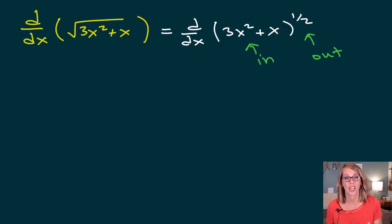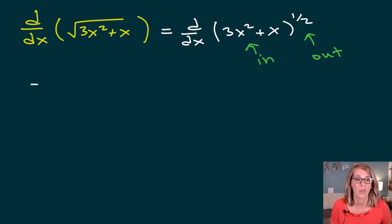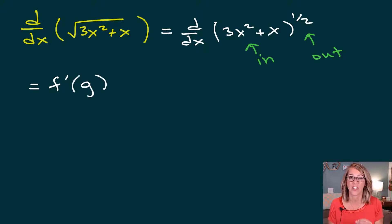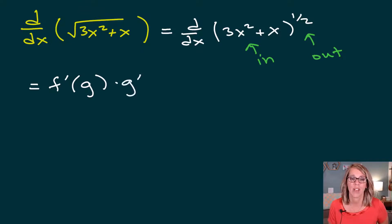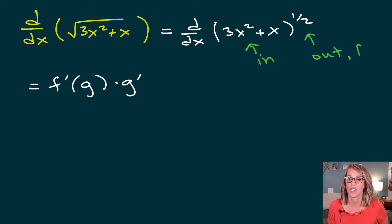So as we differentiate, we're going to apply the chain rule. It's going to be the outer function with respect to the inner function — the inner function stays as is — times the derivative of the inner function. In this case, the one-half power is my outer function and the inner function is 3x squared plus x.